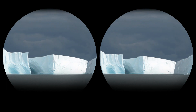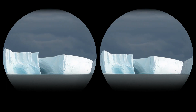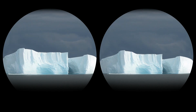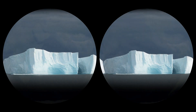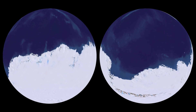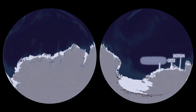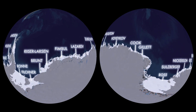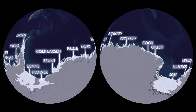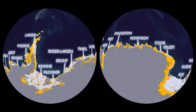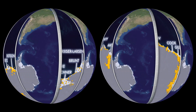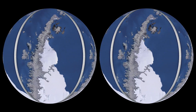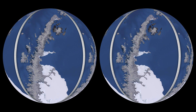Over hundreds of years, glaciers advancing offshore can form ice shelves — massive platforms of ice permanently attached to the glaciers. Ice shelves cover almost half of the Antarctic coastline and some parts of the Greenland and Canadian coasts. They act as dams, restraining glaciers from sliding into the ocean. Several major ice shelves, thousands of years old, have recently disintegrated.